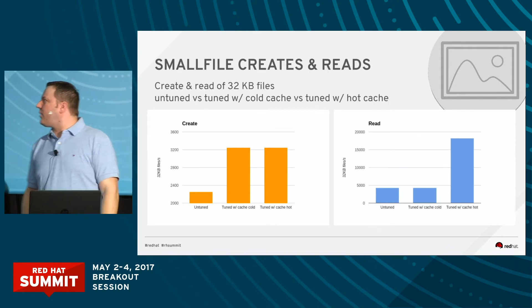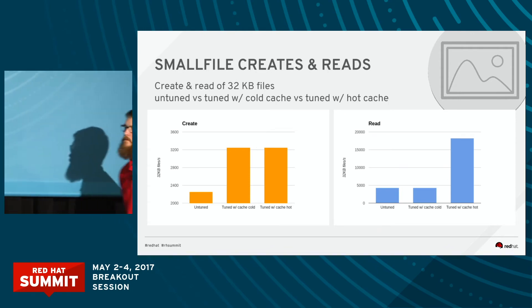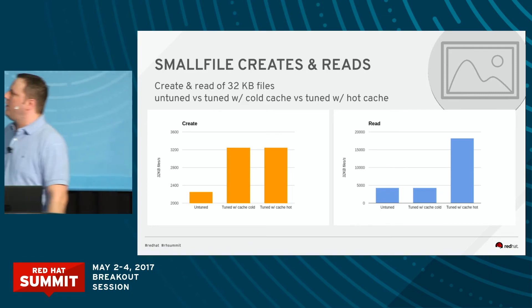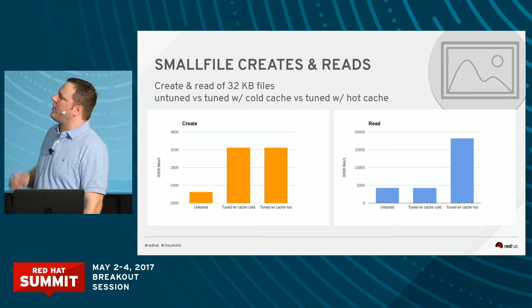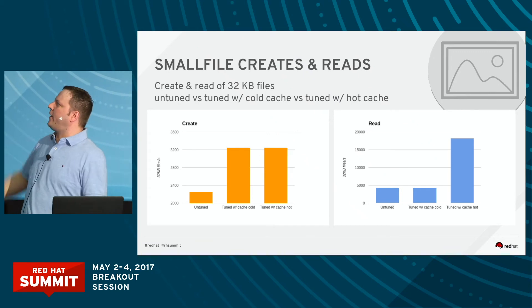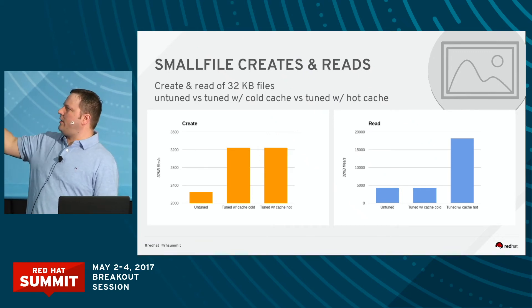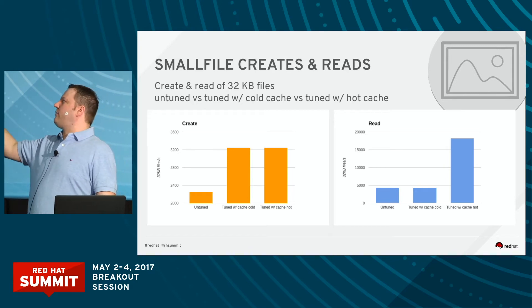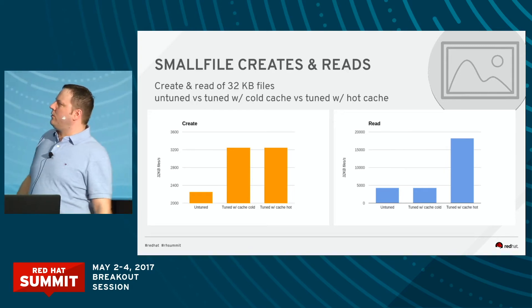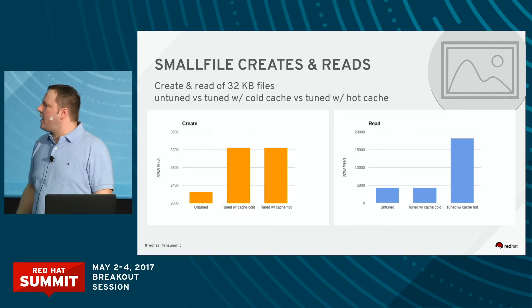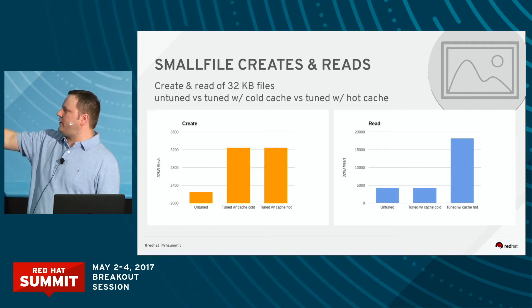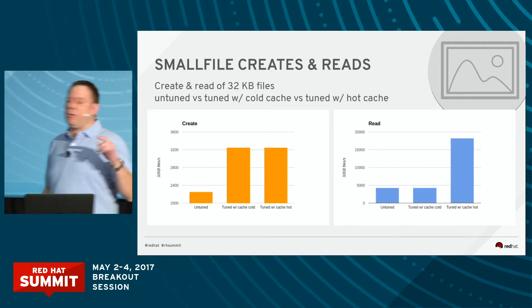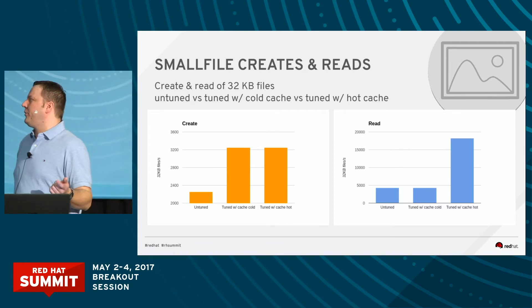Here's a graph of what we're seeing with tuning. In the graph on the left, we see untuned small file creates — this is 32K files. We're looking at untuned versus tuned with cold cache versus tuned with hot cache. On creates, we see that the tuning has a really great impact — that's actually a 44% improvement from the tunables.